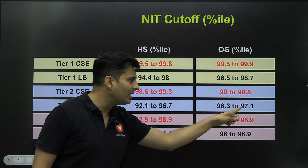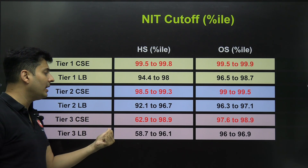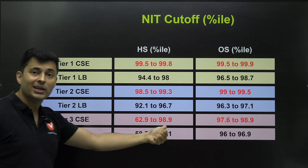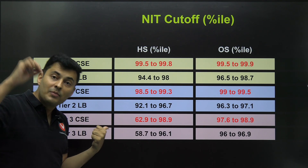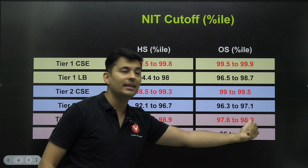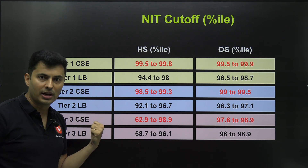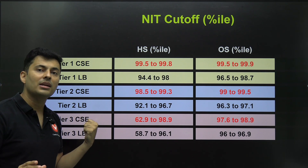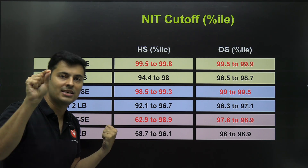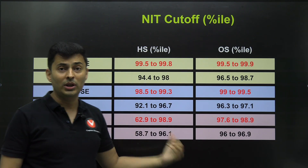Even for tier 3 NITs you will see the home state cutoff for computer science is 98.9 — very shocking. Even if you go to lower NITs, people are still choosing computer science, and outside state is also 98.9. From this table it is very clear: if you want the top branch with high-paying opportunities, you have to get 99 percentile — that is why it is the magic figure. For tier 1 NITs you should be in the 99.8 to 99.9 range.